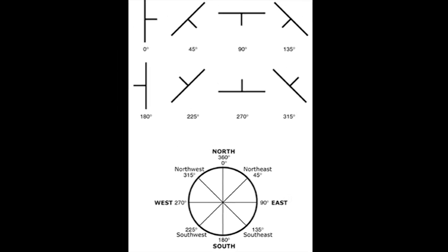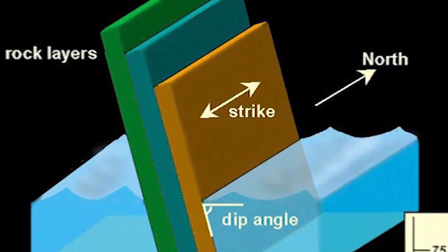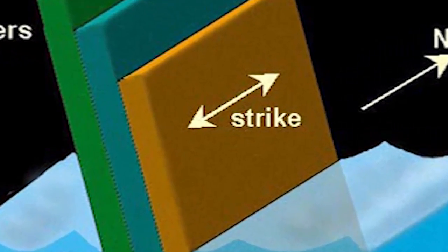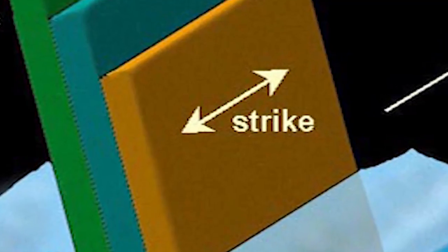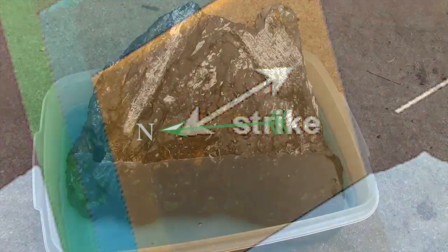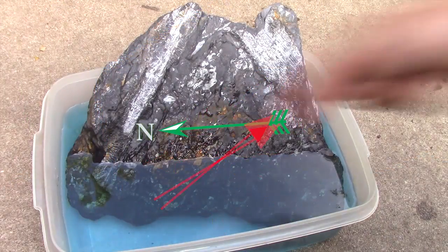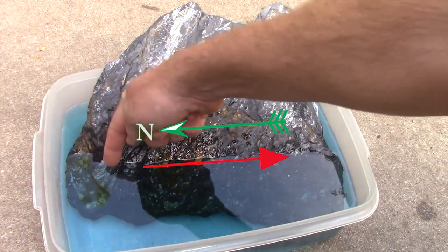But wait, there is a problem here. Looking at our water intersecting our rock layer, we see that the strike line is just that — a line, not a directional arrow. So in this case with the strike line going exactly north-south, we could call it 0 degrees for north or 180 degrees for south.